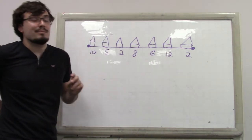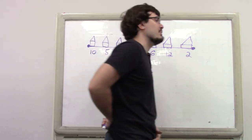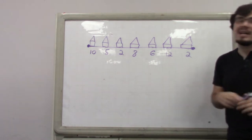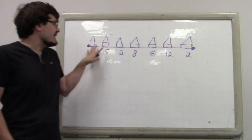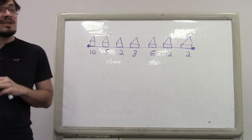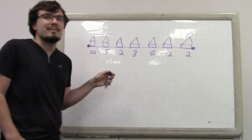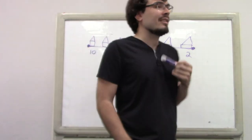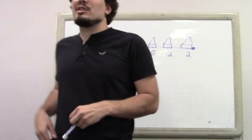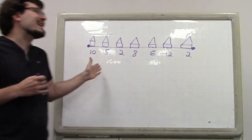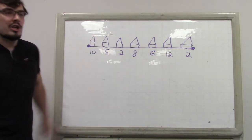Now here's the thing: the robber wants to maximize his total value — think of each value as the value of goods he expects to steal. But the constraint is that if the robber breaks into two houses that are adjacent to each other, the neighbors will talk and report it, increasing his risk of being caught. So he doesn't want to break into any two adjacent houses.